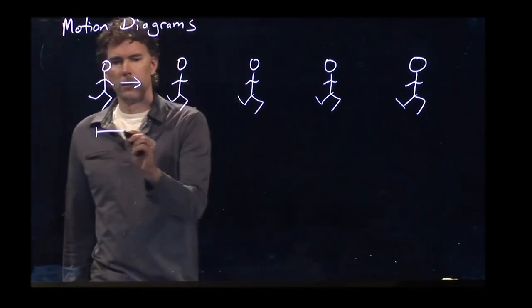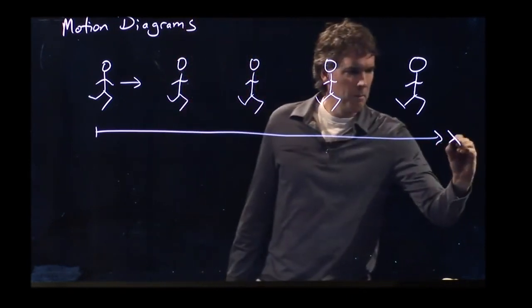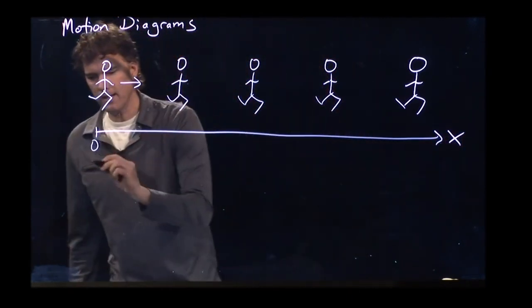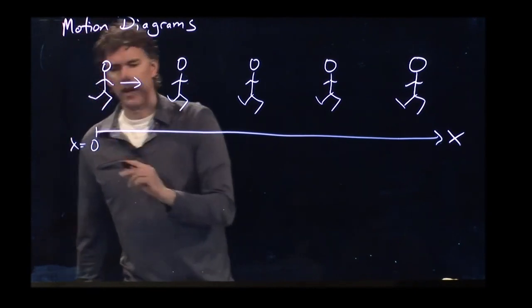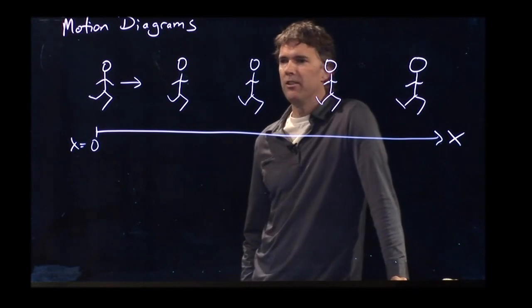Because we didn't decide which direction was positive or negative. So you have to do that first. Let's say that this is positive to the right, and they start at x equals zero. Their position is increasing.